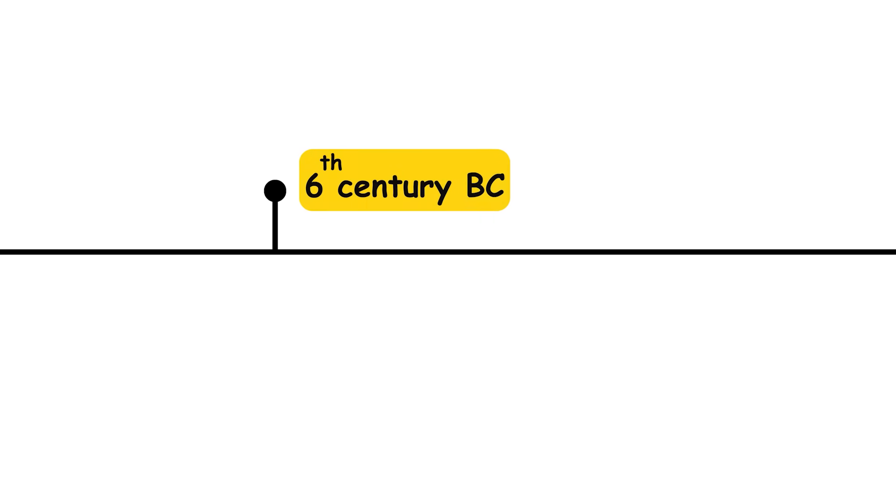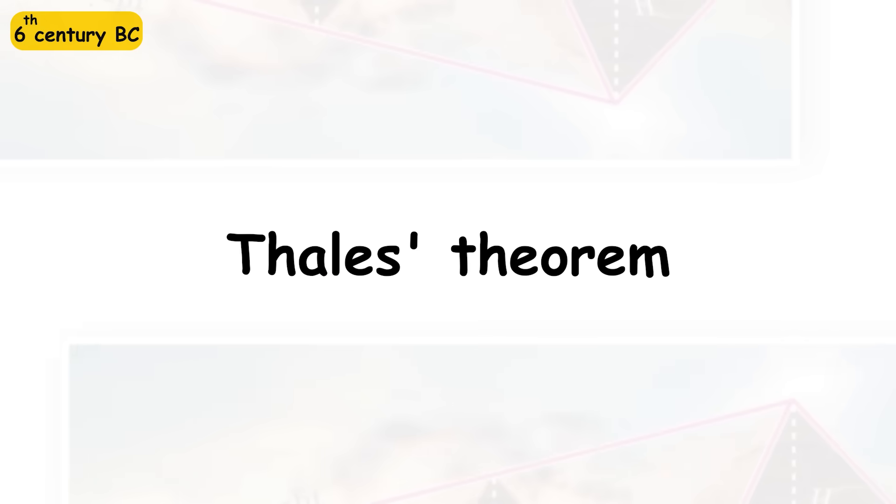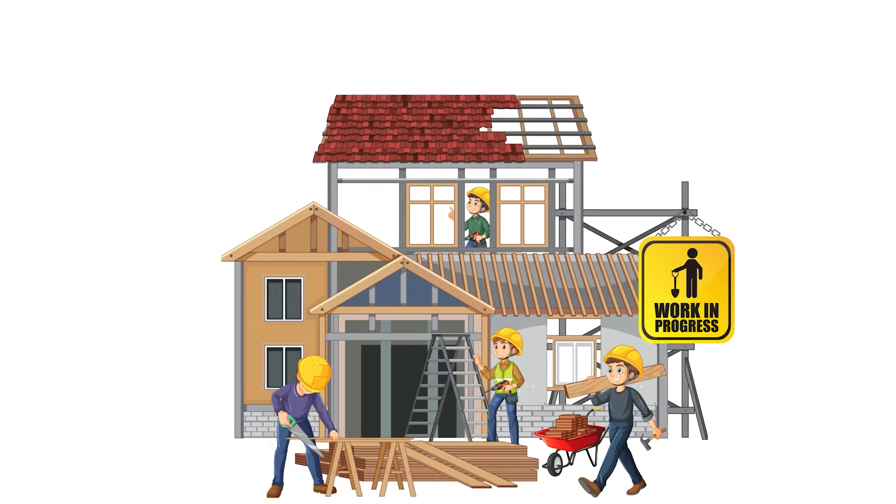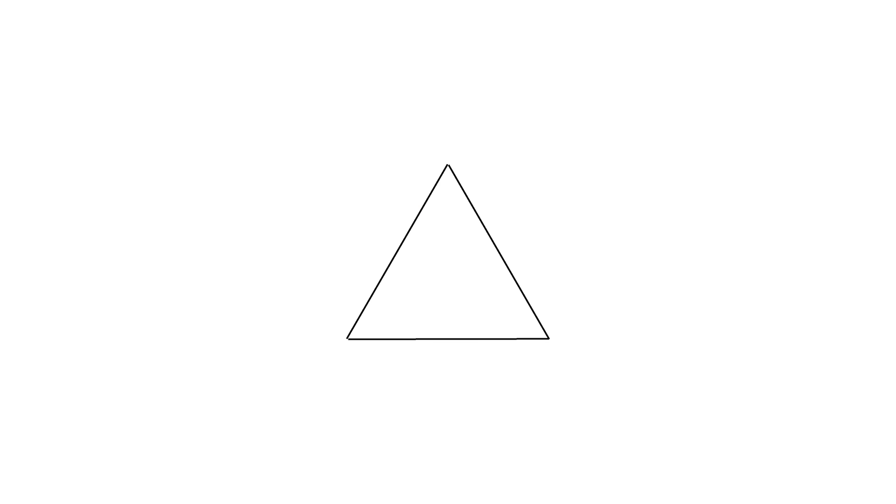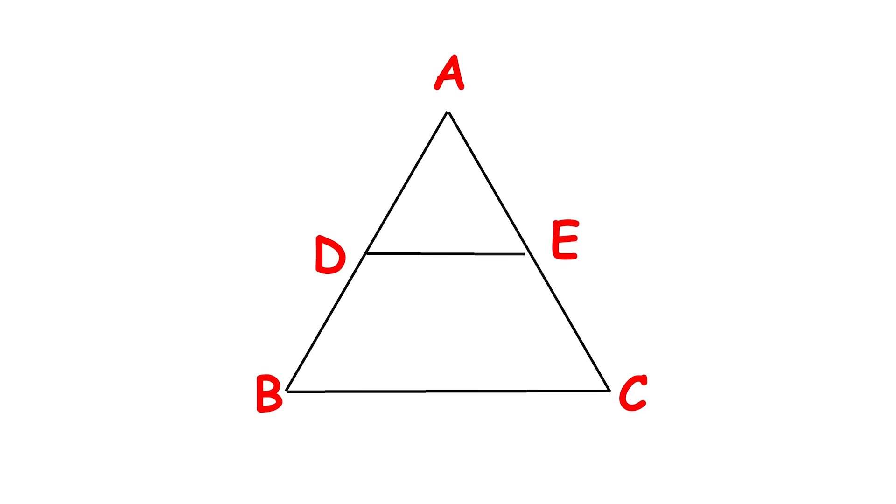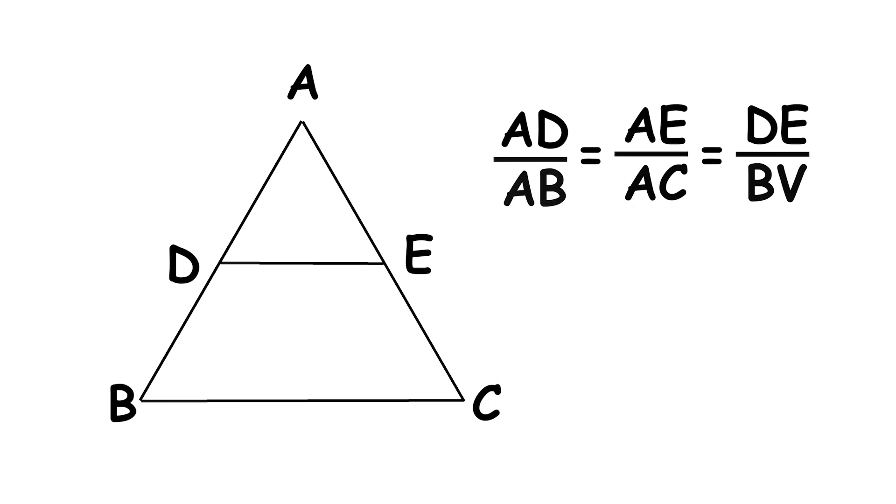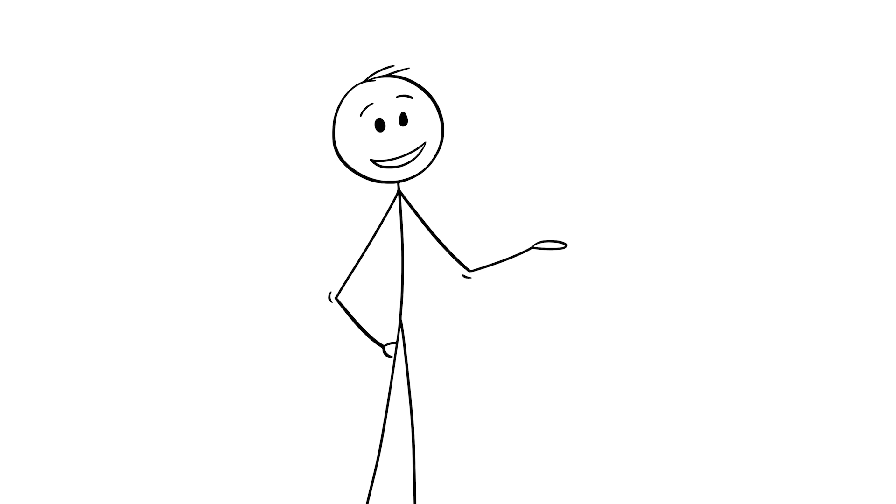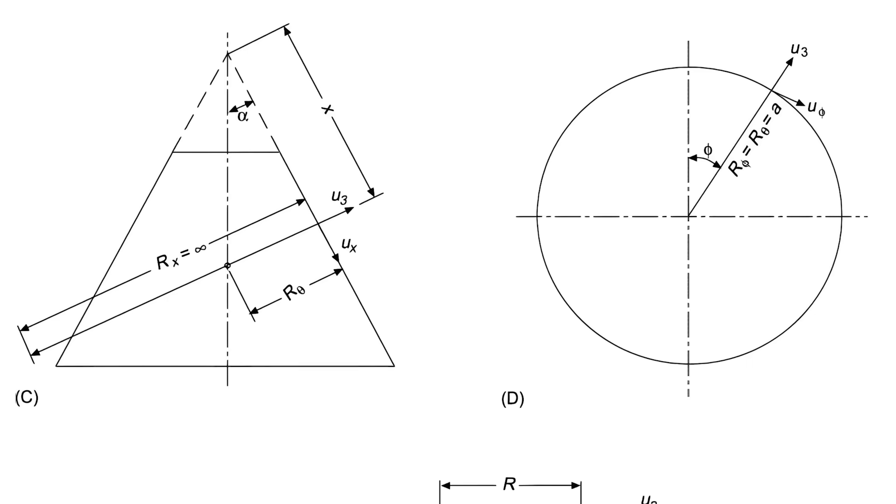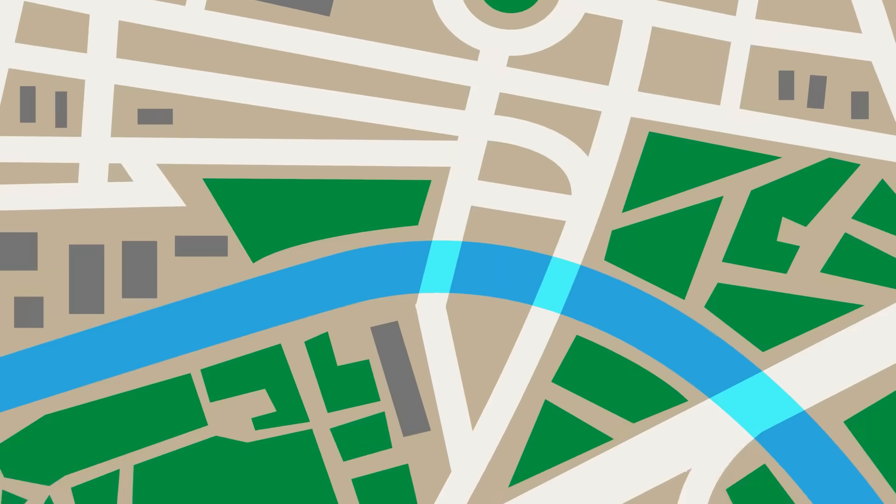6th century BC: Thales theorem. Thales theorem establishes proportional relationships in triangles, facilitating precise calculations and constructions. It states that if a line is drawn parallel to one side of a triangle and intersects the other two sides, then it divides those sides proportionally. It is fundamental to understanding classical geometry and has applications in navigation, architecture, and spatial problem-solving.